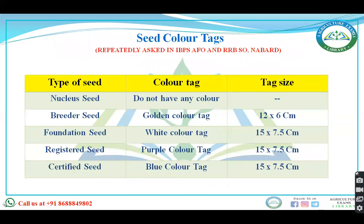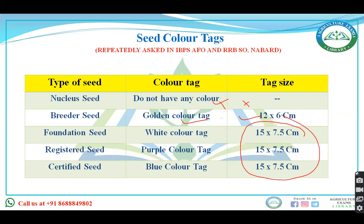Important topics: seed classes. There are nuclear seed, breeder seed, foundation seed, registered seed, and certified seed. Nuclear seed has no tag color and no tag size. Breeder seed has a golden yellow tag of size 12×6 cm. All others have a size of 15×7.5 cm. Foundation seed has a white tag, registered seed a purple tag, and certified seed a blue tag. Nuclear seed is the first step in seed production, supervised by the plant breeder, with 100% genetic and physical purity, but it is exempted from certification.